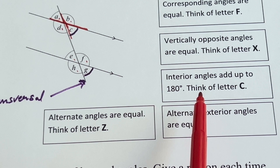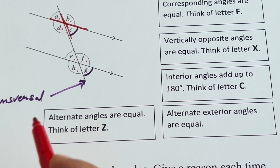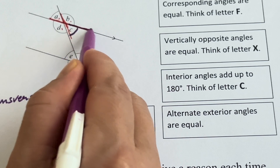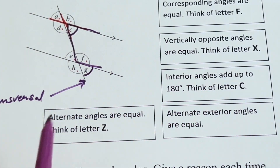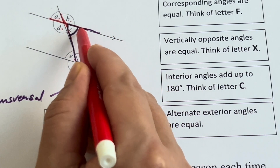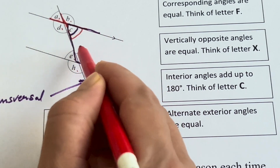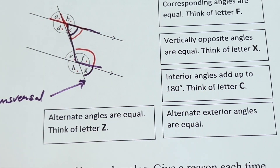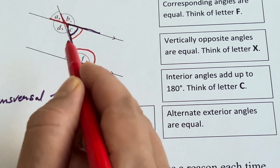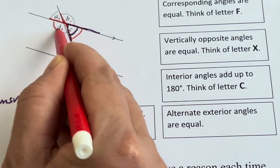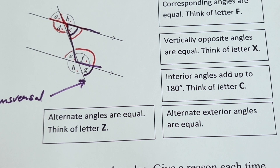The third point says interior angles add up to 180 degrees — think of the letter C. The interior angles are angle C and angle F, and they add up to 180 degrees. On the opposite side of the transversal you have angle E and angle D, which are also interior angles.